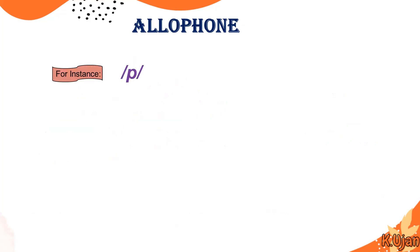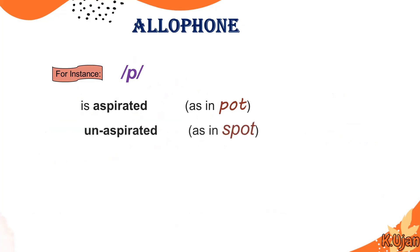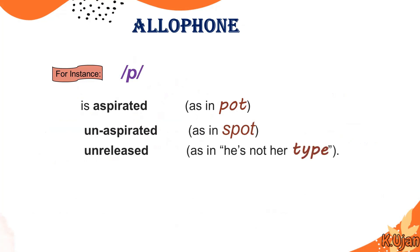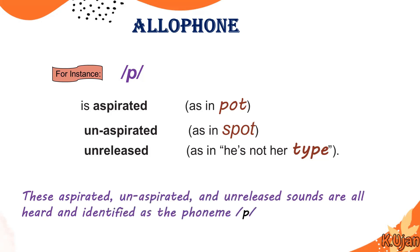Here is another example using the phoneme /p/. The phoneme /p/ can have various sound variations: aspirated as in pot /pʰ/, unaspirated as in spot /p/, and unreleased as in 'he is not her type' /p̚/. So /pʰ/, /p/, and /p̚/ are actually variations of the phoneme /p/. These aspirated, unaspirated, and unreleased sounds are all heard and identified as the phoneme /p/.